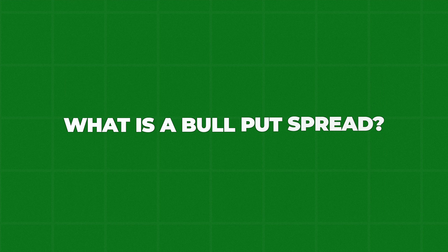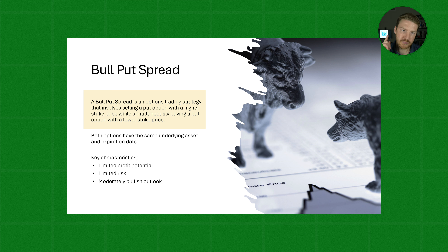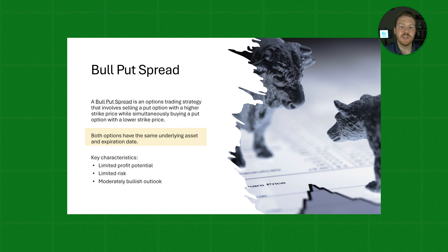What is a bull put spread? A bull put spread is an options trading strategy that involves selling a put option with a higher strike price while simultaneously buying a put option with a lower strike price. Both of these options need to have the same underlying asset and the same expiration date.